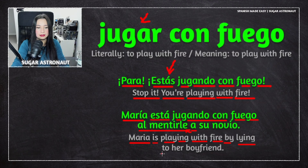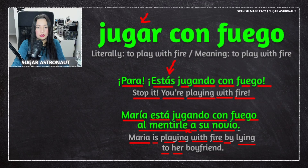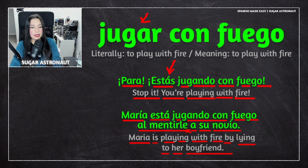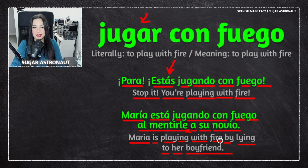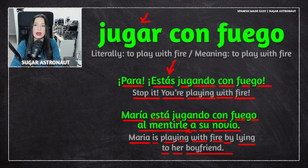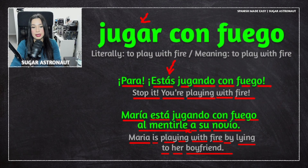A means 'to.' Su means 'her,' and also 'his,' but we're talking about Maria, so it means her. Novio means boyfriend. Novia means girlfriend. So: María está jugando con fuego al mentirle a su novio — Maria is playing with fire by lying to her boyfriend.